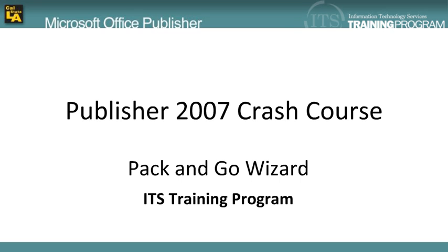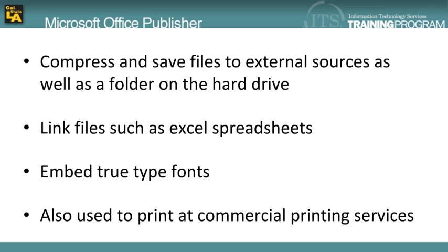The Pack and Go Wizard can be used to compress and save the publication to external storage devices. It can include linked files, such as another publication or an Excel worksheet with the publication. The Pack and Go Wizard can also save the files to a folder on the hard drive for copying.